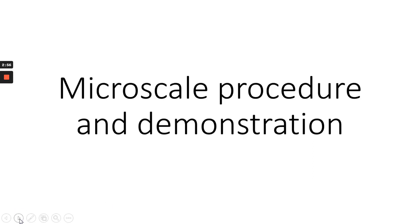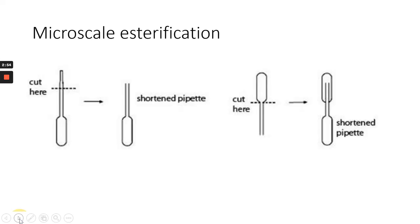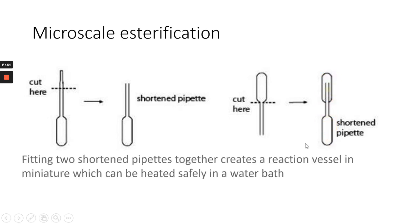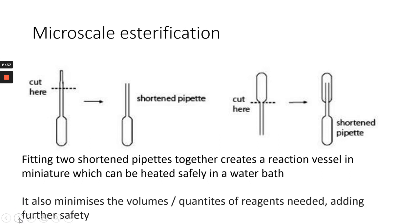We're going to have a quick look at the demonstration, so I'll put the equipment up. We cut two plastic pipettes — one near the tip and one near the bulb — and one can fit inside the other, as you can see. This forms our reaction vessel, and it can be heated quite safely in a water bath. It also helps minimise the volume and quantities of reagents needed, adding further safety.